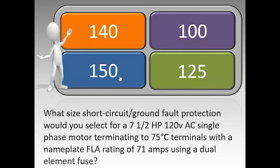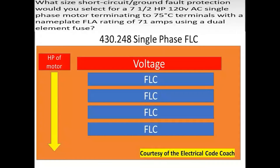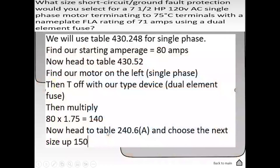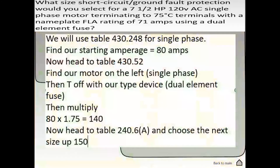The correct answer is 150. For this one, we're going to use table 430.248 for single phase and find our FLC. We start on the left-hand side, find our horsepower, come down and tee off with our respective voltage, and find our FLC, which is 80 amps. Now we head to table 430.52 to find our multiplier. We find our type of motor — single phase — and come across to our type of device, a dual element fuse, giving a multiplier of 175%. We take our FLC of 80 amps multiplied by 1.75, which gives us 140 amps. We head to table 240.6A and choose the next standard size up, which is allowed for short-circuit ground-fault protection. The correct answer is 150.